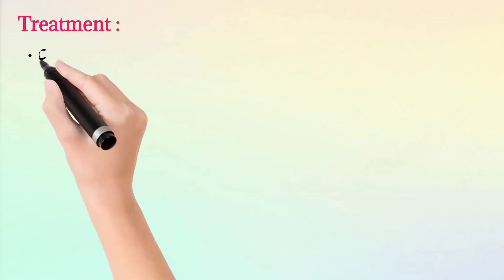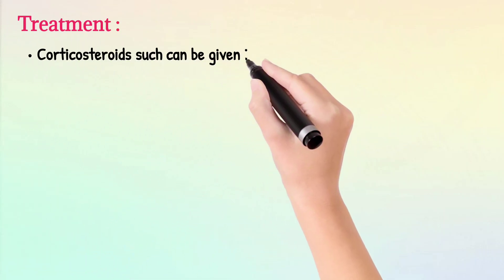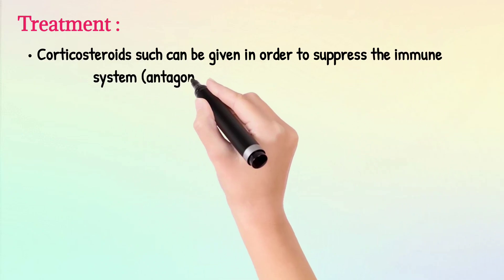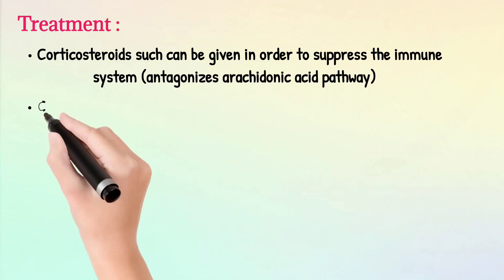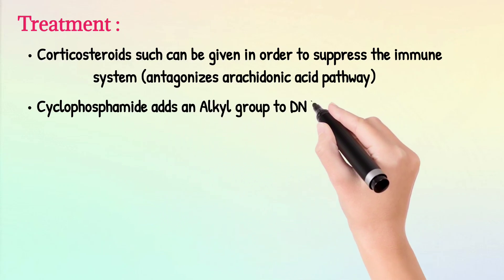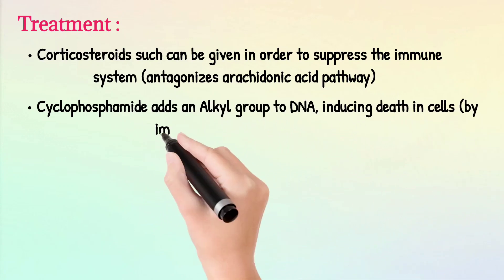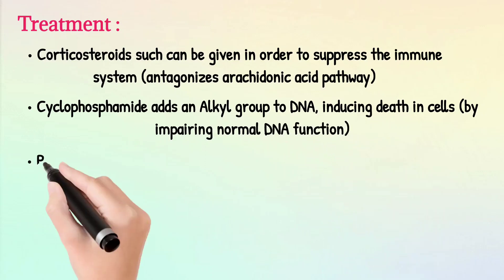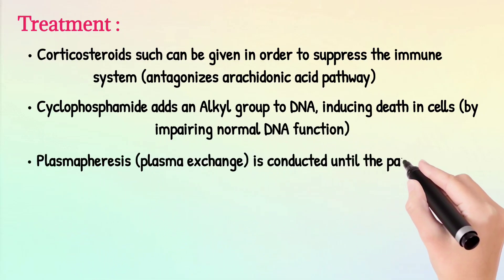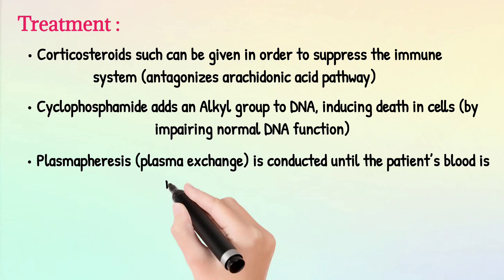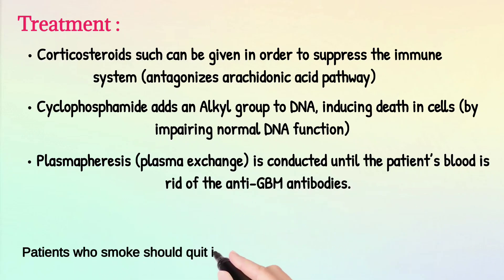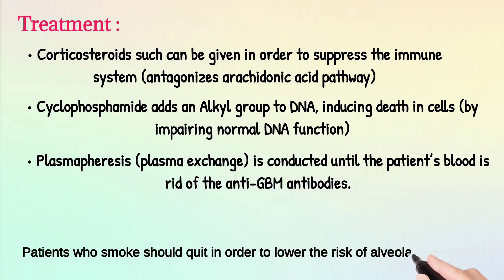Treatment includes corticosteroids to suppress the immune system and antagonize the arachidonic acid pathway. Cyclophosphamide adds an alkyl group to DNA, inducing cell death by impairing normal DNA function. Plasmapheresis, or plasma exchange, is conducted until the patient's blood is rid of the anti-GBM antibodies. Patients who smoke should quit in order to lower the risk of alveolar hemorrhage.